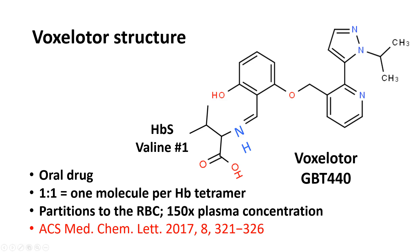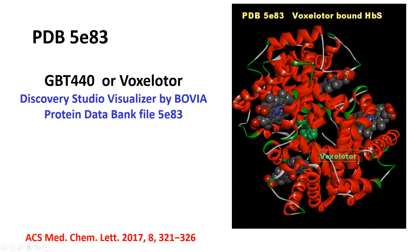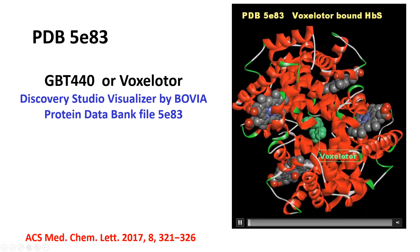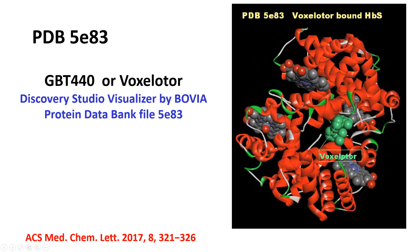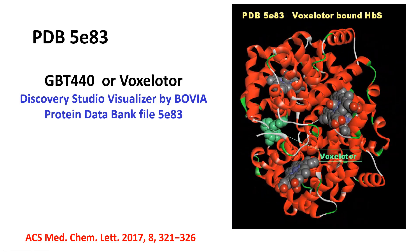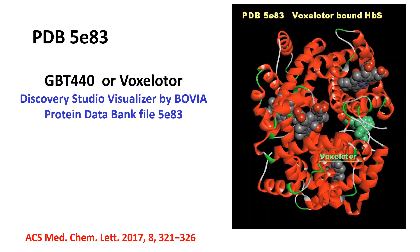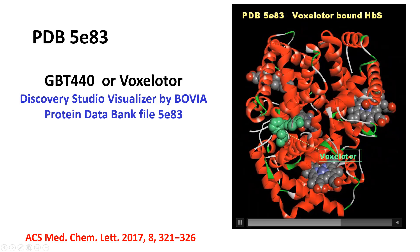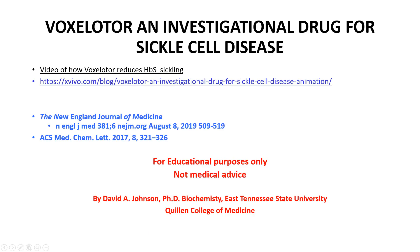Here is the structure from PDB file 5E83 — voxelotor bound to hemoglobin S. I loaded this file, which was deposited in the Protein Data Bank by the authors of the paper, and used Discovery Studio Visualizer to create this model. You can see it turning and see voxelotor in green, showing how it binds to the structure and aids in the stabilization of the relaxed form of hemoglobin S, which prevents sickling. A wonderful little drug.